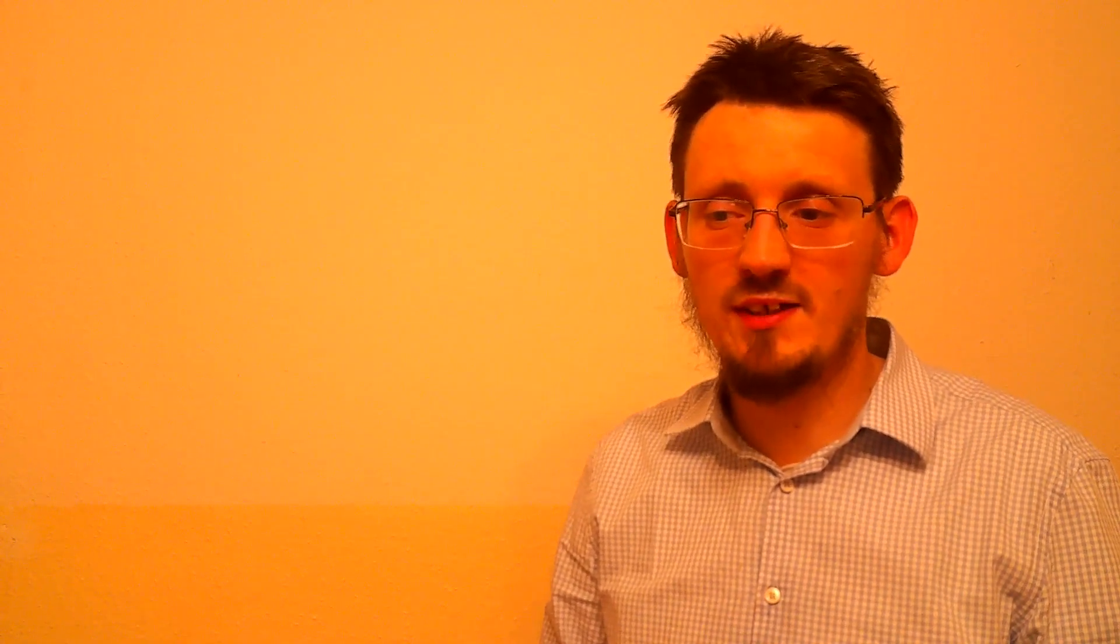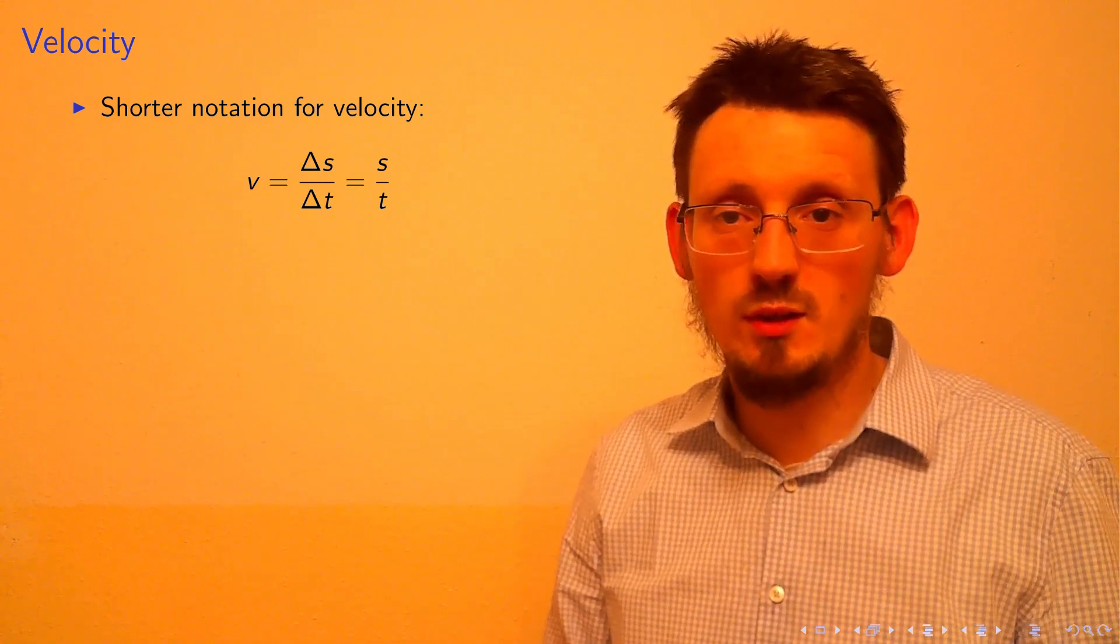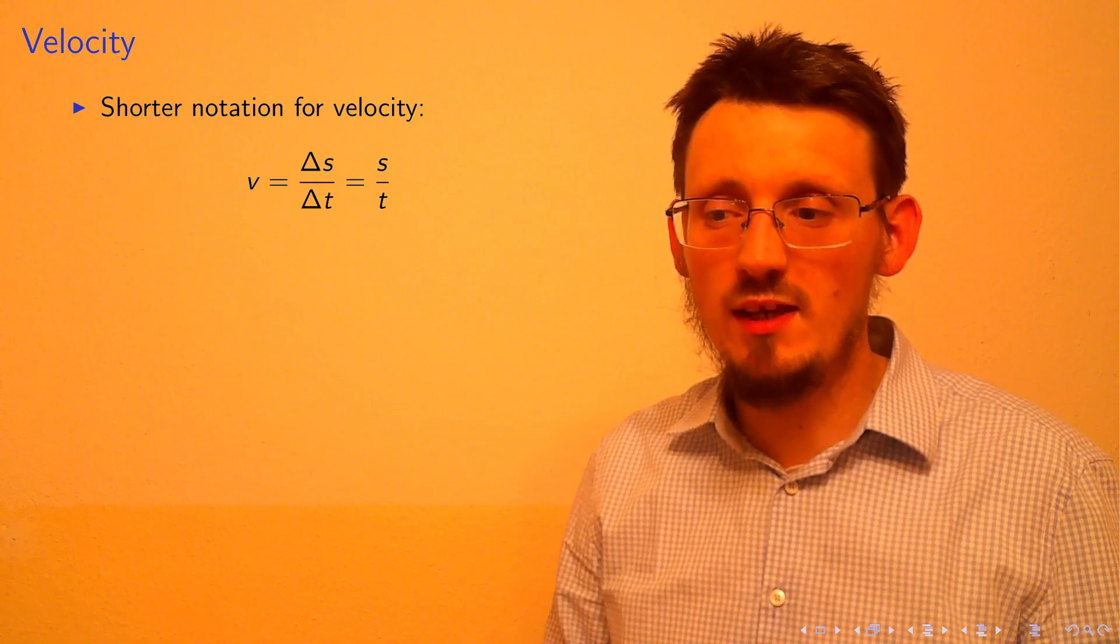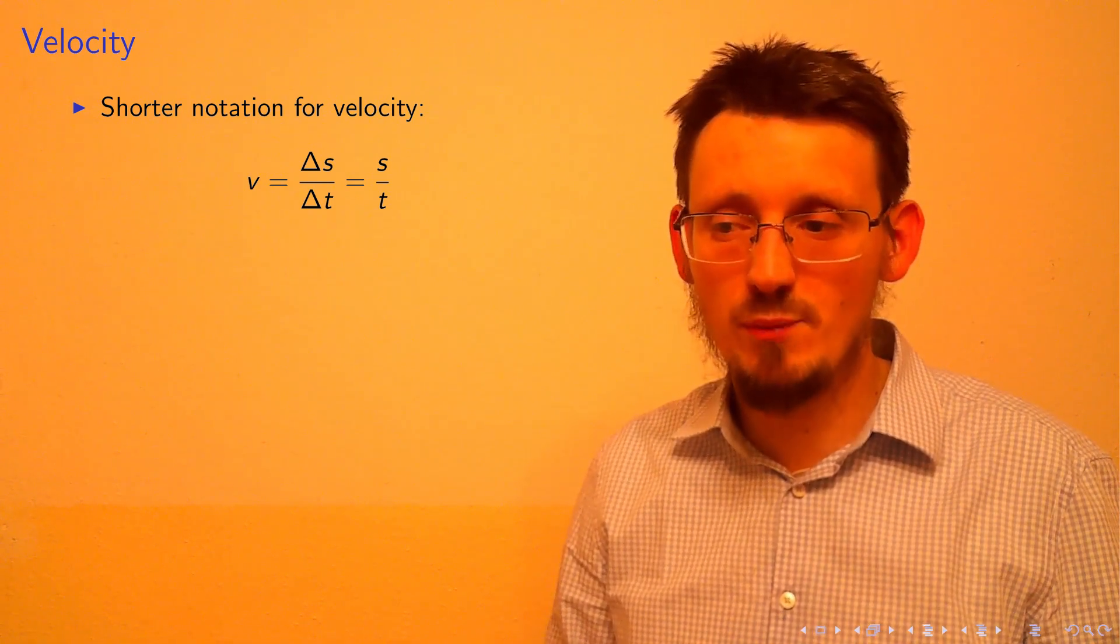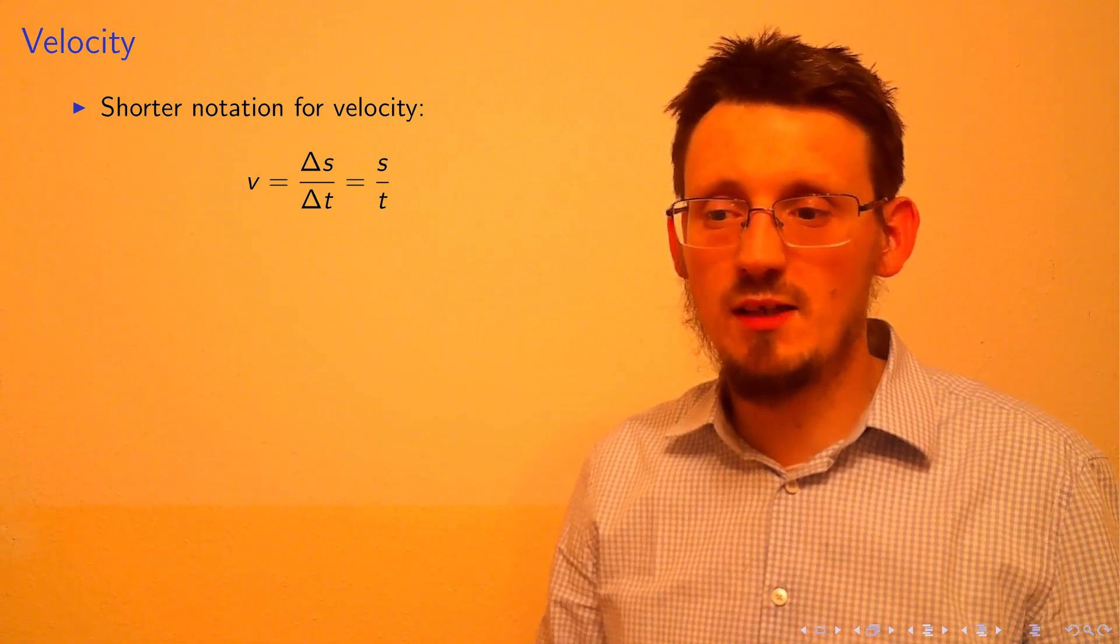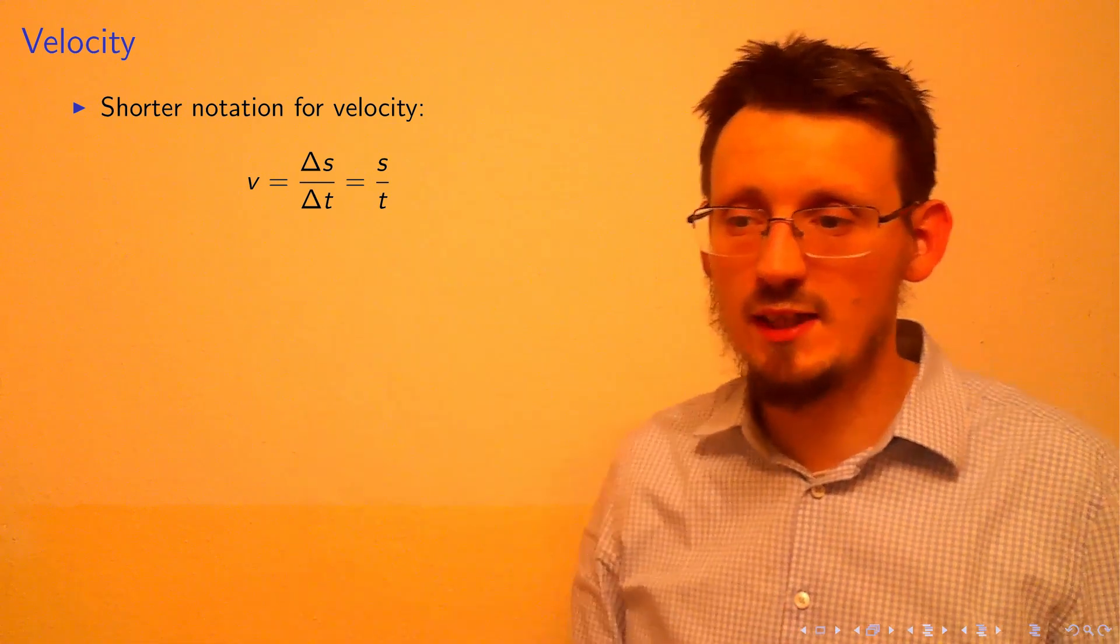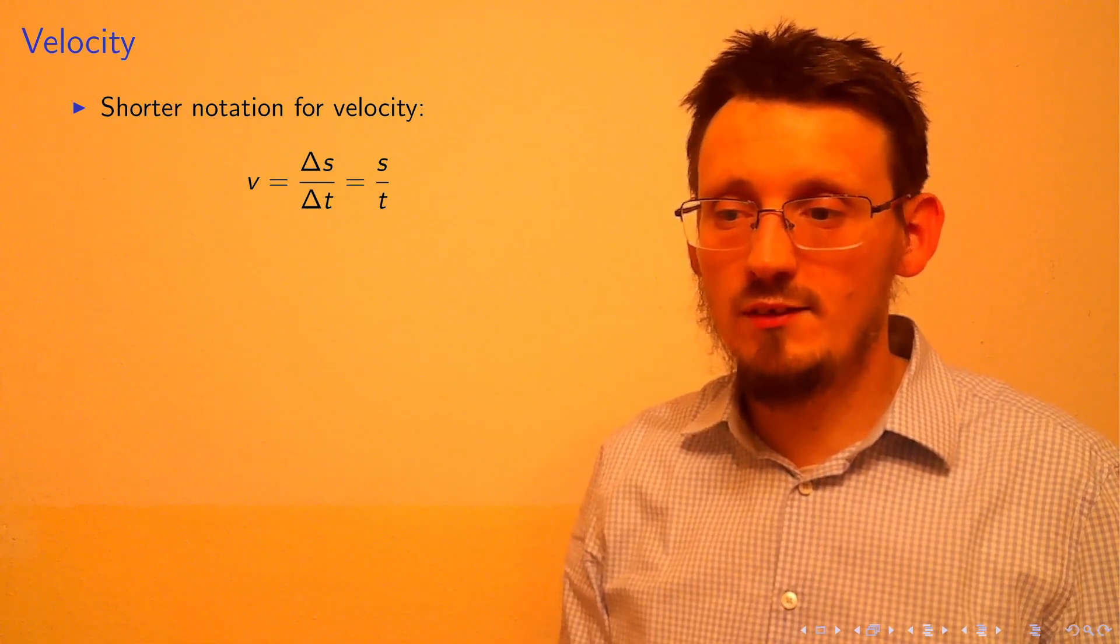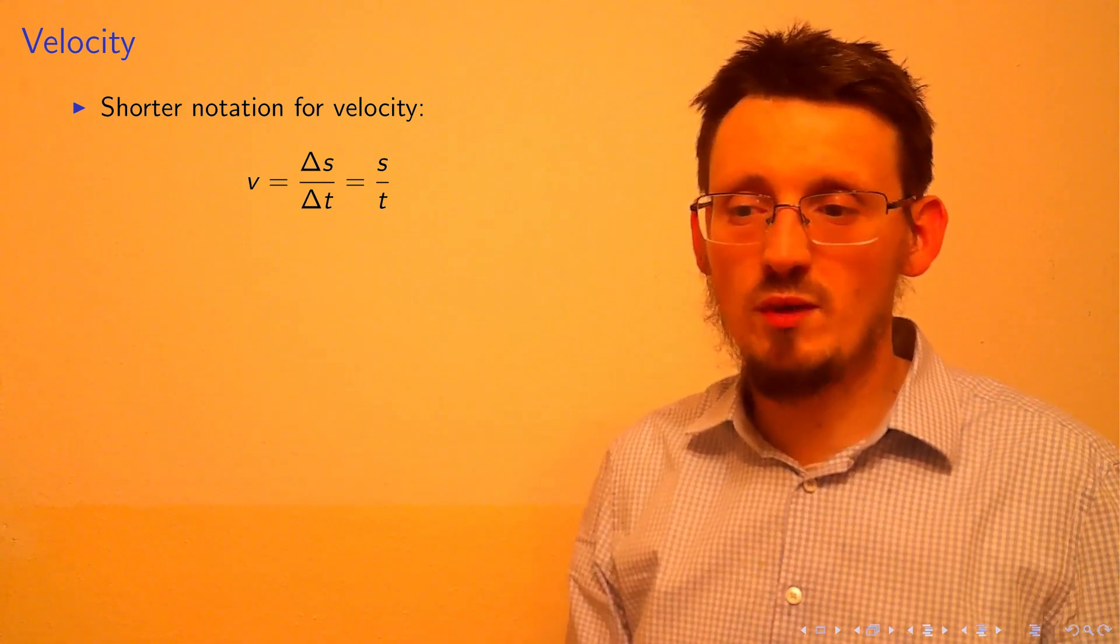In the last video we discussed the formula v equals delta s over delta t. Now we choose the initial condition so that s₁ equals zero and t₁ equals zero. This means we can omit the delta symbols and shorten this to write v equals s over t.